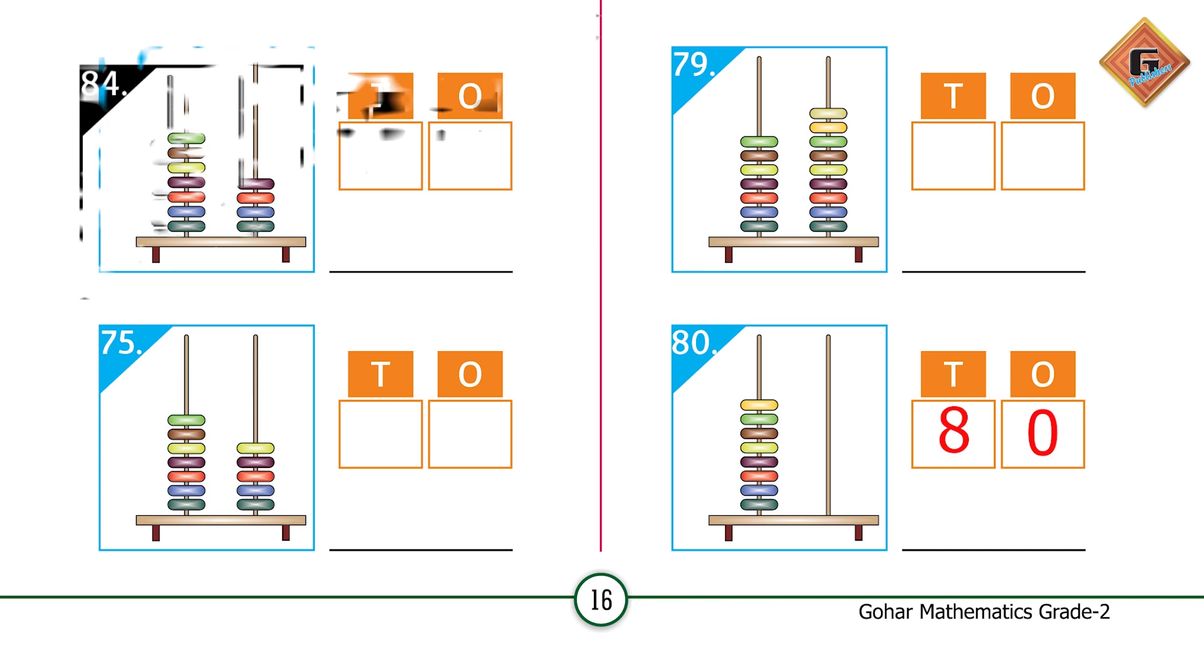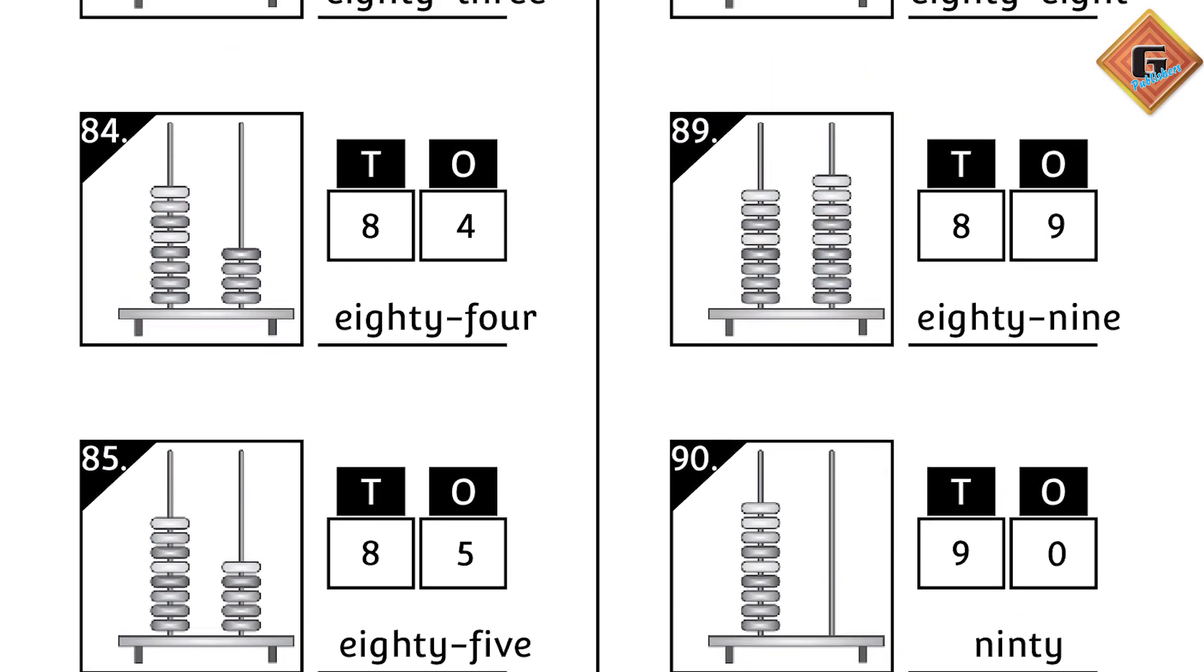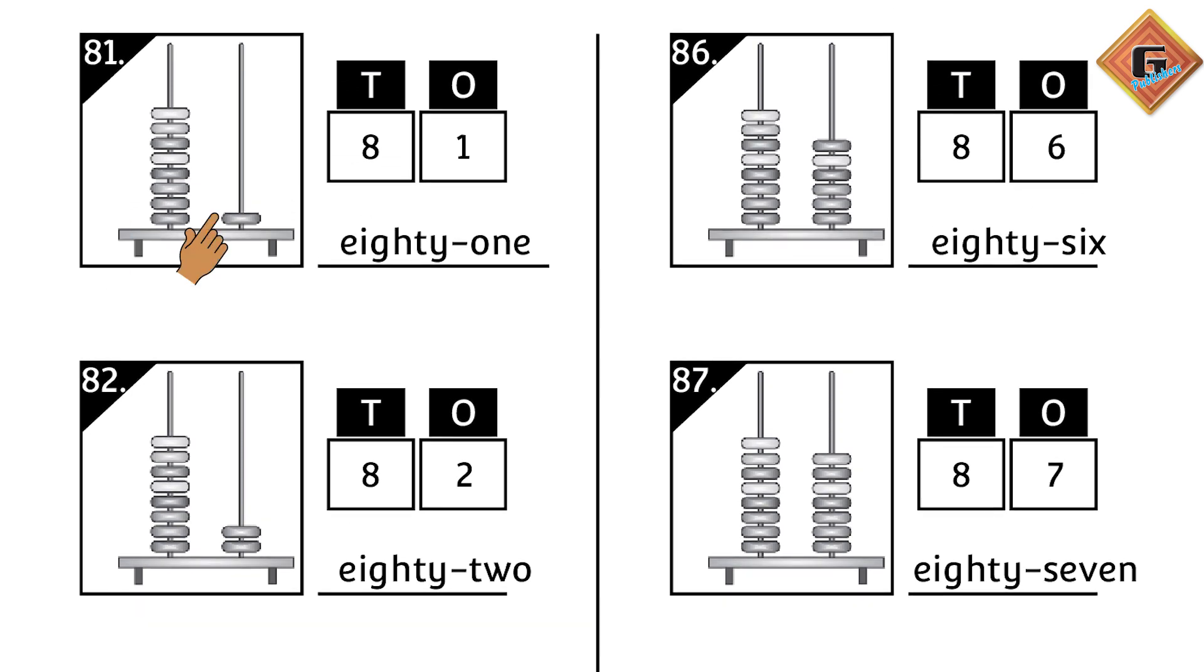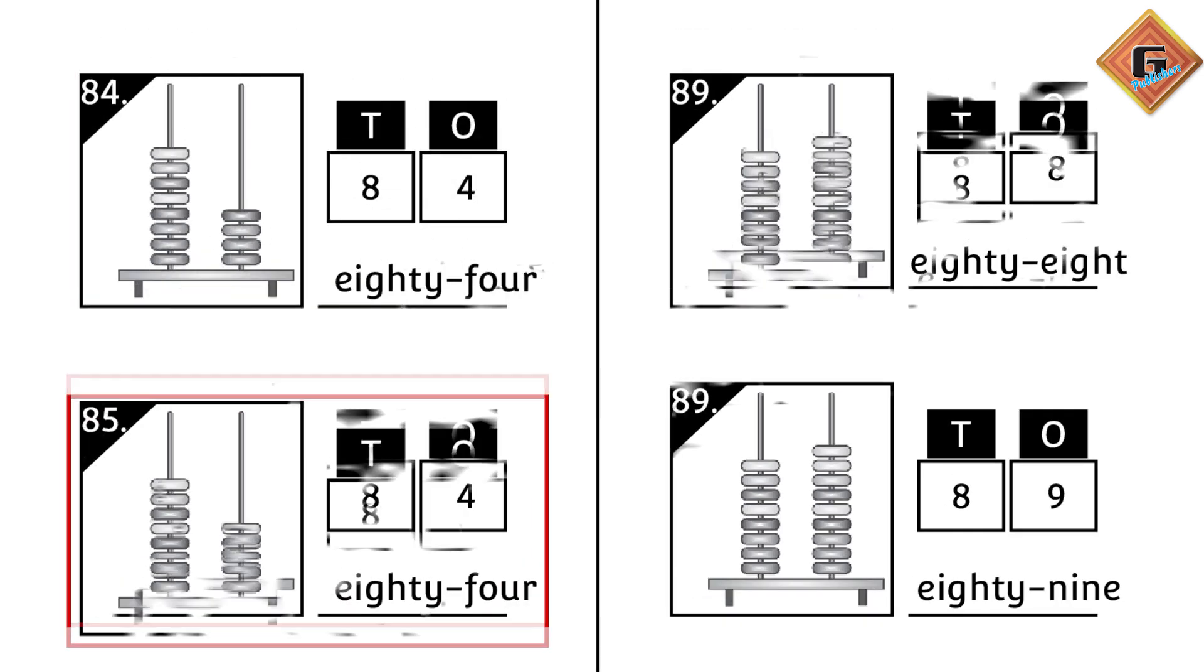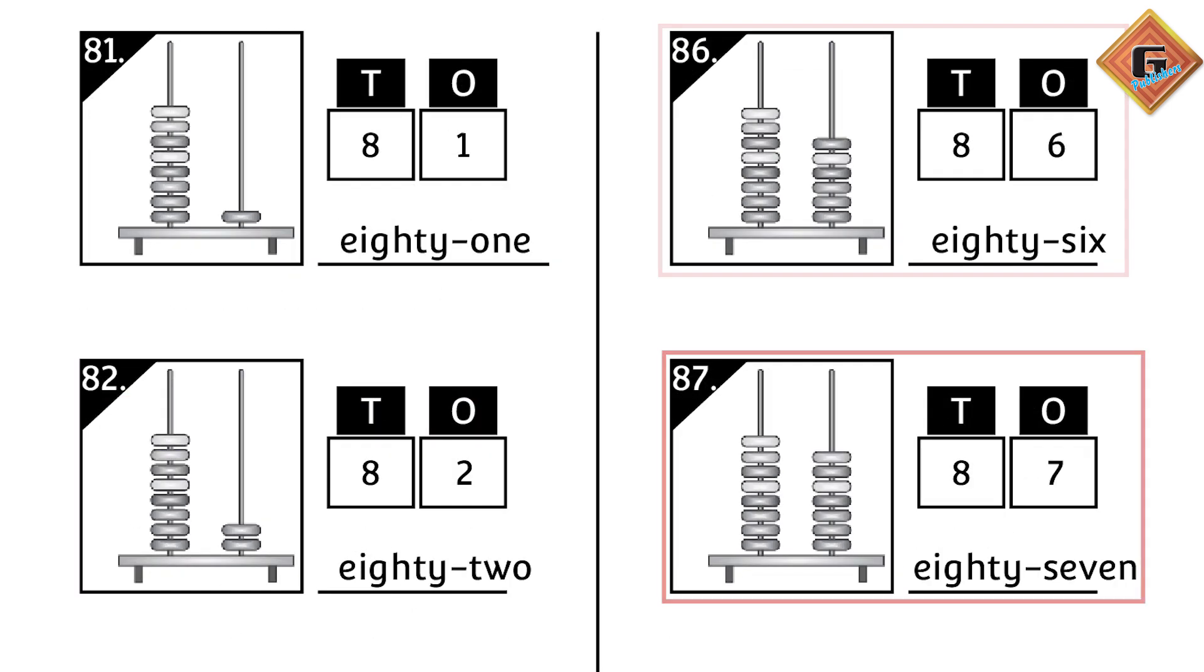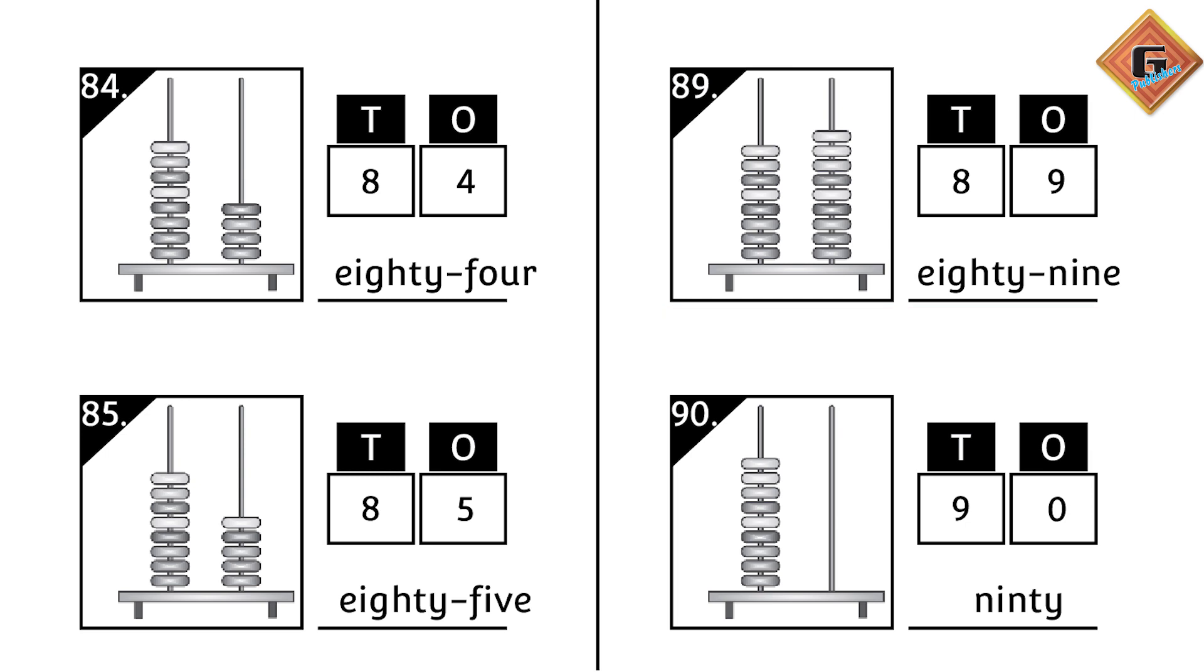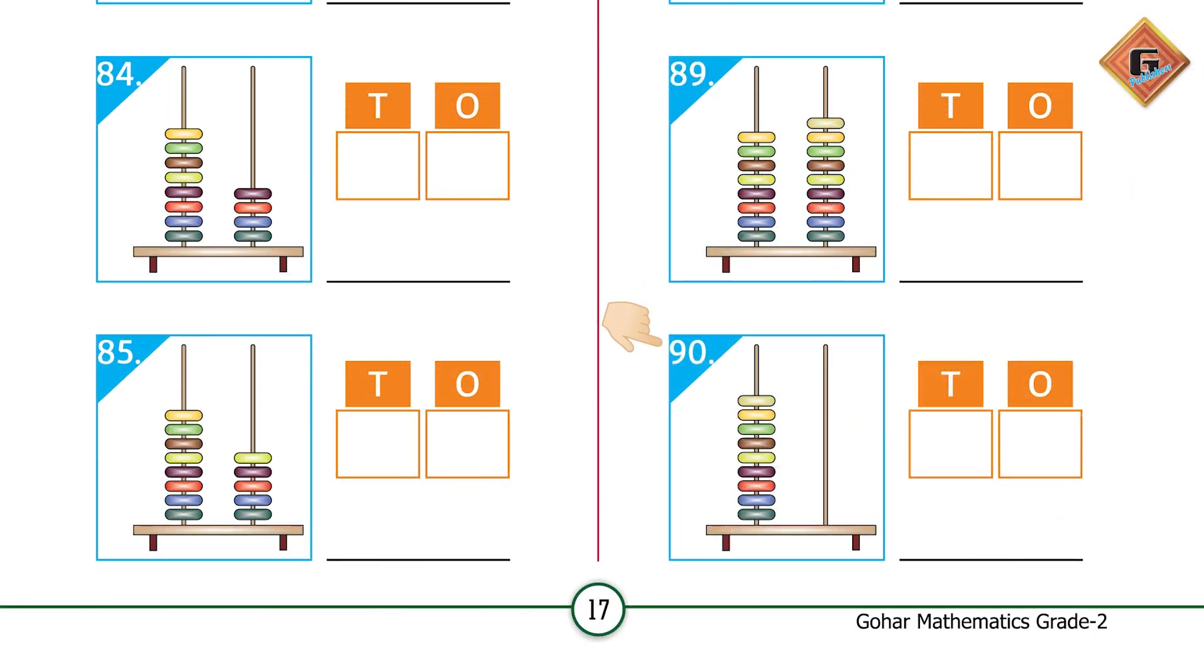Move to the next page. The first picture shows one bead on the ones side and eight on the tens side. The number name is 81. After 81 it's going to be 82, 83, 84, 85, 86, 87, 88, 89.